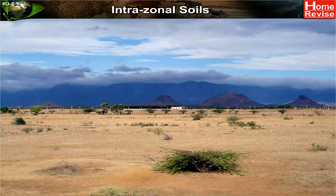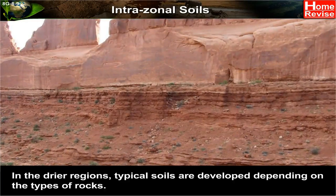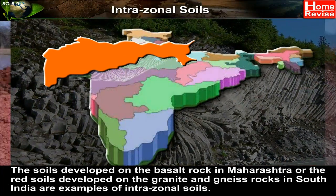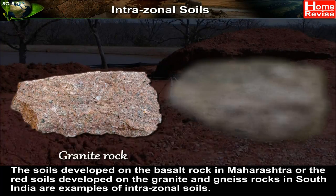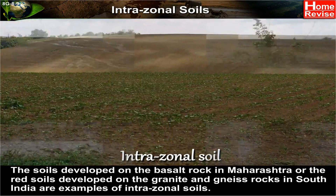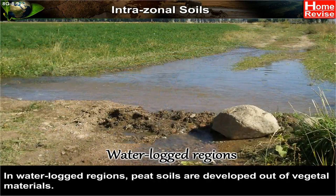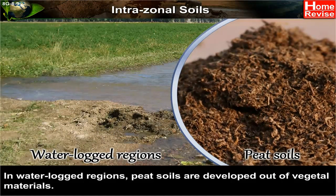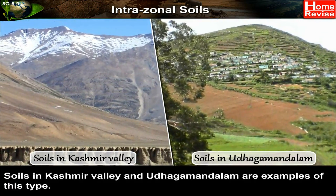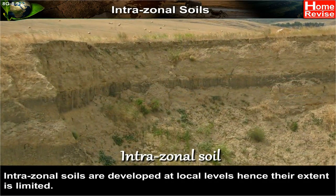2. Intrazonal soils: in drier regions, typical soils are developed depending on the types of rocks. The soils developed on the basalt rock in Maharashtra, or the red soils developed on the granite and gneiss rocks in South India, are examples of intrazonal soils. The soils from which water is not easily drained become saturated. In waterlogged regions, peat soils are developed out of vegetal materials. Soils in Kashmir Valley and Udhagamandalam are examples of this type. Intrazonal soils are developed at local levels, hence their extent is limited.